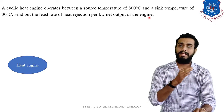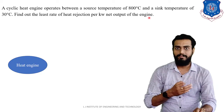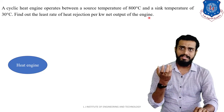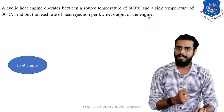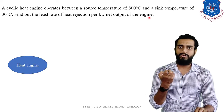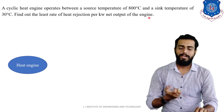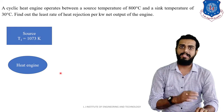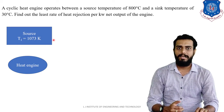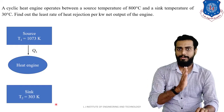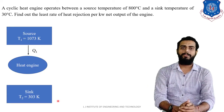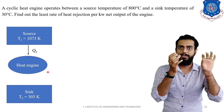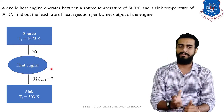Remember and keep in mind that a heat engine is a power-producing device. Now, a cyclic heat engine is operating. Let us draw the block diagram. The source temperature is 800 degrees Celsius, which converts to 1073 Kelvin, and the sink temperature is 30 degrees Celsius, equivalent to 303 Kelvin. The heat engine will take heat from the high temperature reservoir, do some work, and reject heat to the low temperature reservoir.